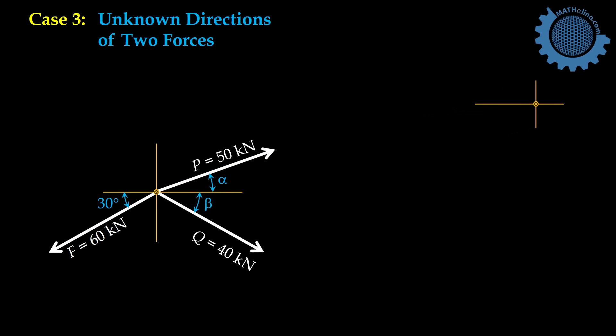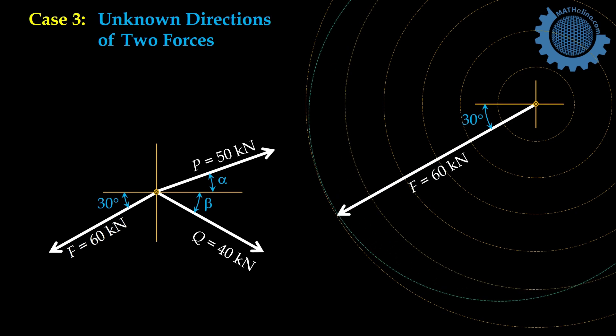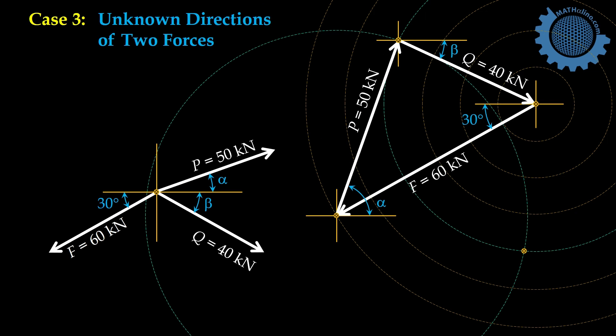In case number three, all magnitudes are given, but two forces have unknown directions — call them alpha and beta. The appropriate solution for this is the graphical method. This is the 60 kilonewton force, the 50 kilonewton force, and the 40 kilonewton force. These two circles intersect at two points. We use the upper point for the appropriate upward direction of P. We can easily find alpha and beta by finding theta and phi using the cosine law. I will leave to you how to do it. This type of problem hits the limitation of using complex numbers to solve equilibrium of concurrent forces.